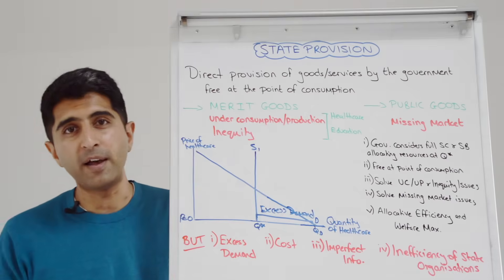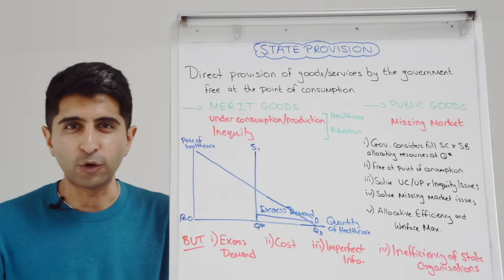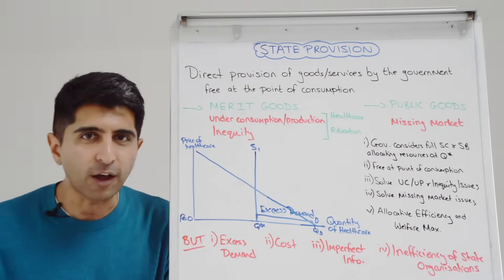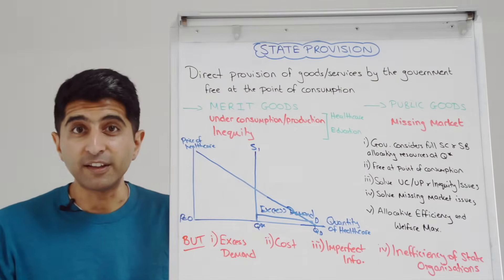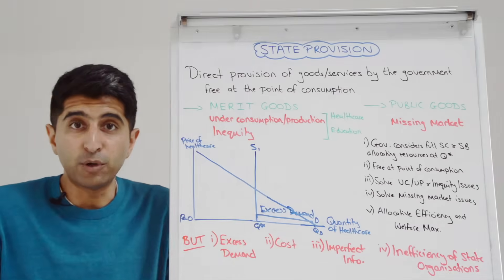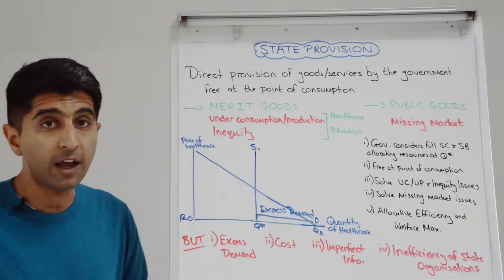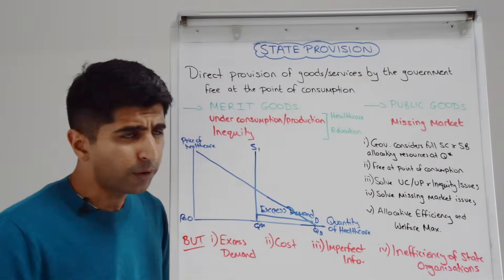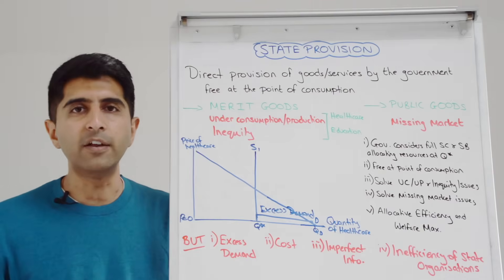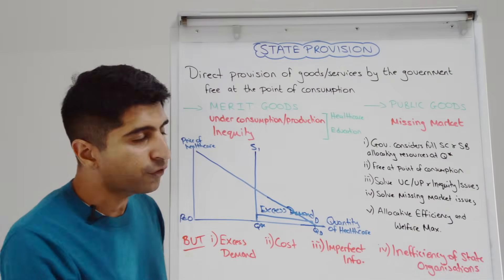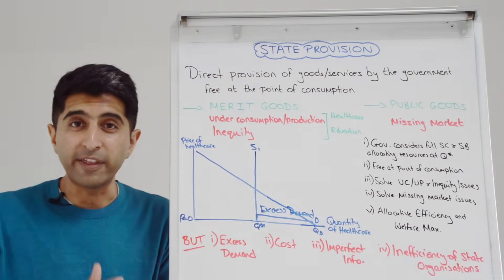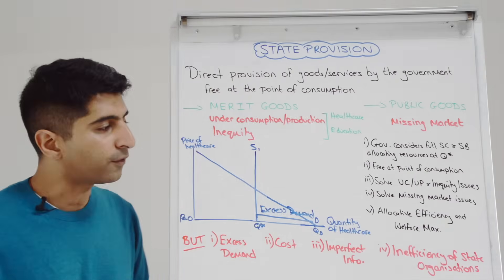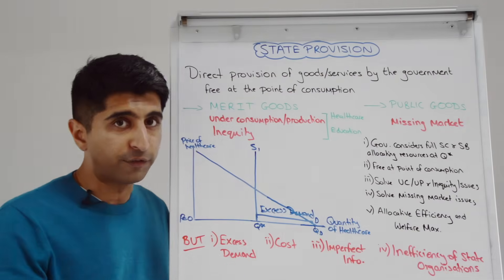Governments do not have perfect information. We assume they know social benefits and social costs, that they can value all externalities and know the socially optimum level of output — but of course they don't. So in reality, chances are quantity is not going to be at Q star: it could be higher, in which case government failure arguments come in if they're overdoing resource allocation, or it could be lower, worsening the excess demand. Government failure risks both ways. Also, state-run organisations tend to be highly inefficient because they lack a profit motive, so costs tend to be much higher, raising questions about whether this is really the most effective use of public money.